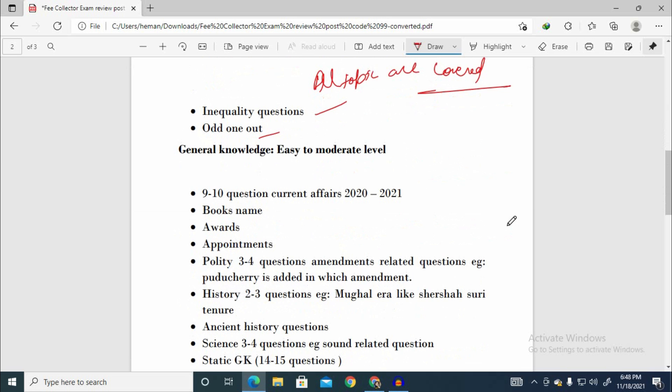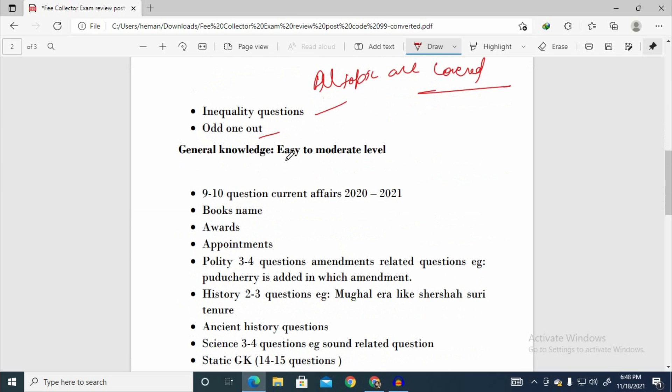Now let's talk about general knowledge, which was easy to moderate level. 9-10 questions were from current affairs. Current affairs will be from 2020 end to 2021 start. This means you will prepare current affairs from July-August 2021.